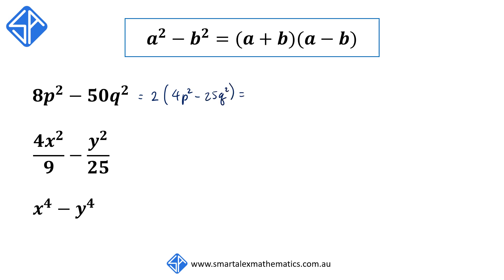This can be written as 2[(2p)² - (5q)²], and this now factorizes to 2(2p + 5q)(2p - 5q).